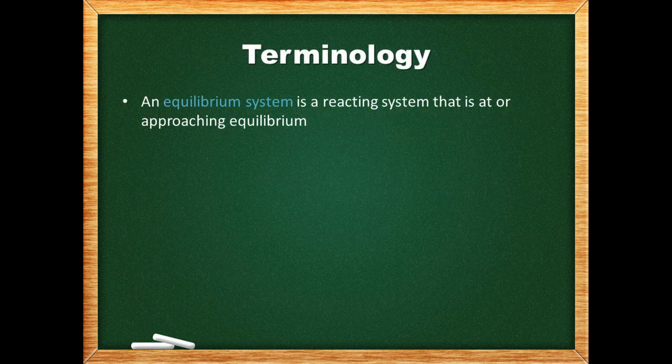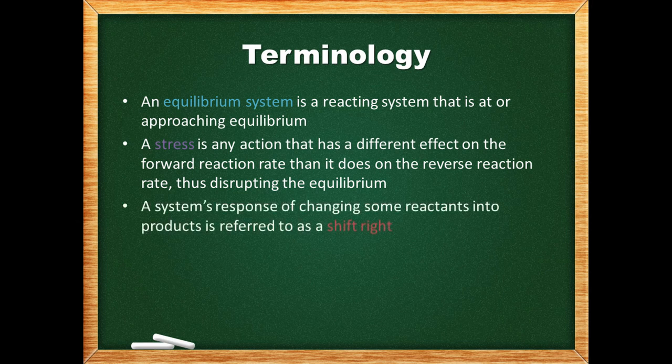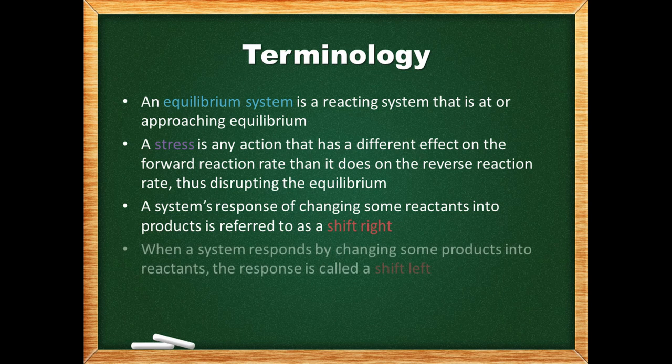An equilibrium system is a reacting system that is at or approaching equilibrium. A stress is any action that disrupts the equilibrium by having a different effect on the forward reaction rate than it does on the reverse reaction rate. A right shift is the system's response of changing some reactants into products, while a left shift is the opposite.